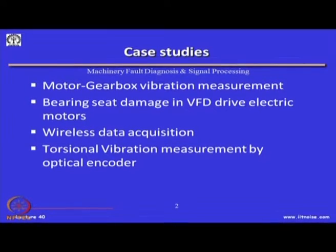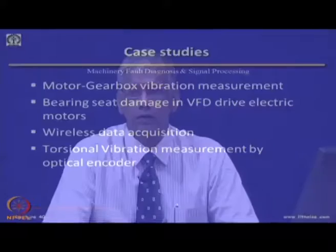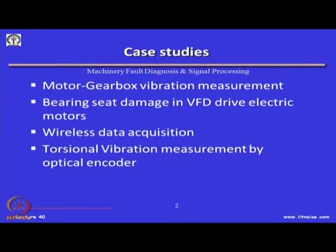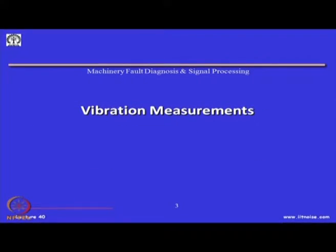Another emerging area is monitoring the health by torsional vibration. In ISO standards and mostly in this class, we have talked about linear vibration measurements, but recently there have been techniques where people have used torsional vibration measurements to find out faults in machines. Unlike the accelerometers used to measure linear vibrations, torsional vibration measurements using simple optical encoders are a very cheap method for such analysis. Now I will come to the very first case study on vibration measurements.